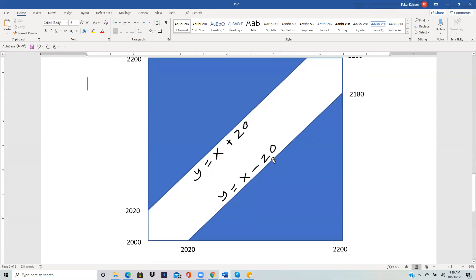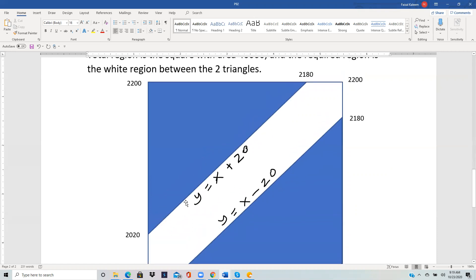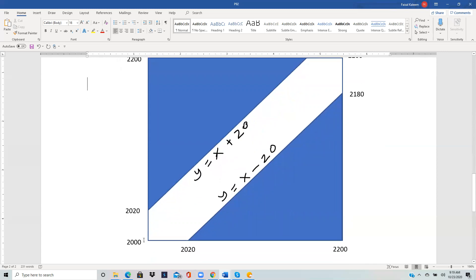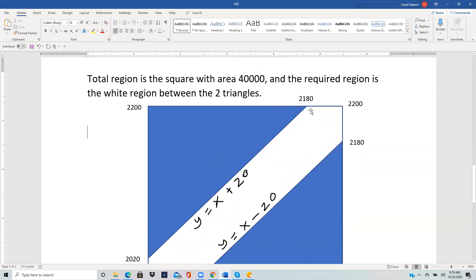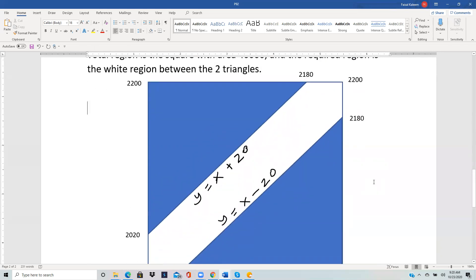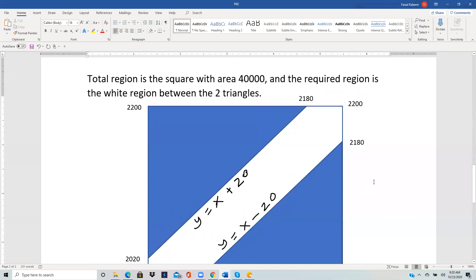How do we get these points? This is the equation Y equals X plus 20. At this point, X is 2000, so when you put X is 2000, you get 2020 for Y. Over here, Y is 2200 at this point, so when you put Y equals 2200, you get X is 2180, and so on for the other points.